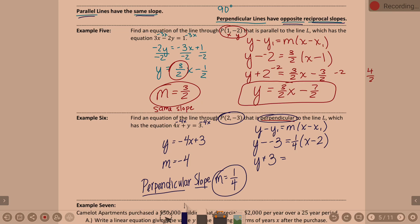Distribute the one-fourth. So 1/4x minus what is 2 times a fourth? Two-fourths, which reduces to one-half.